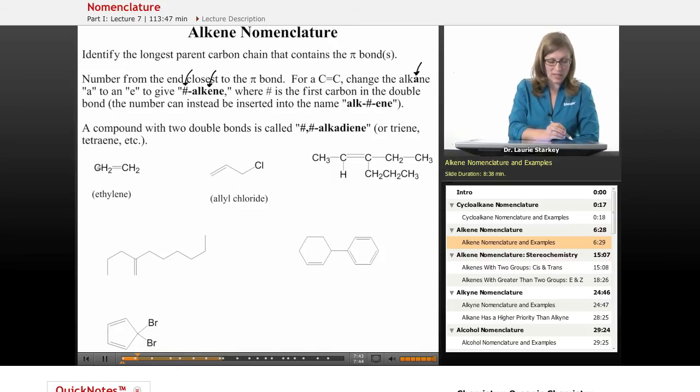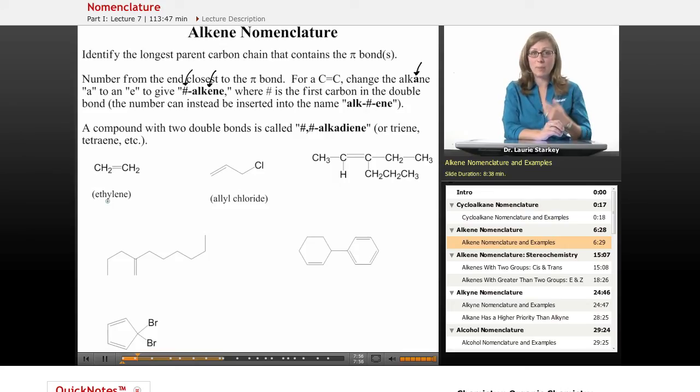So for example, our simplest alkene is a two-carbon alkene. It has a common name. This is called ethylene. Ethylene is a gas that is generated by fruits in the ripening process. So ethylene is actually sprayed on fruit to help them ripen when they're picked earlier for packaging and for handling. So this is commonly known as ethylene gas.